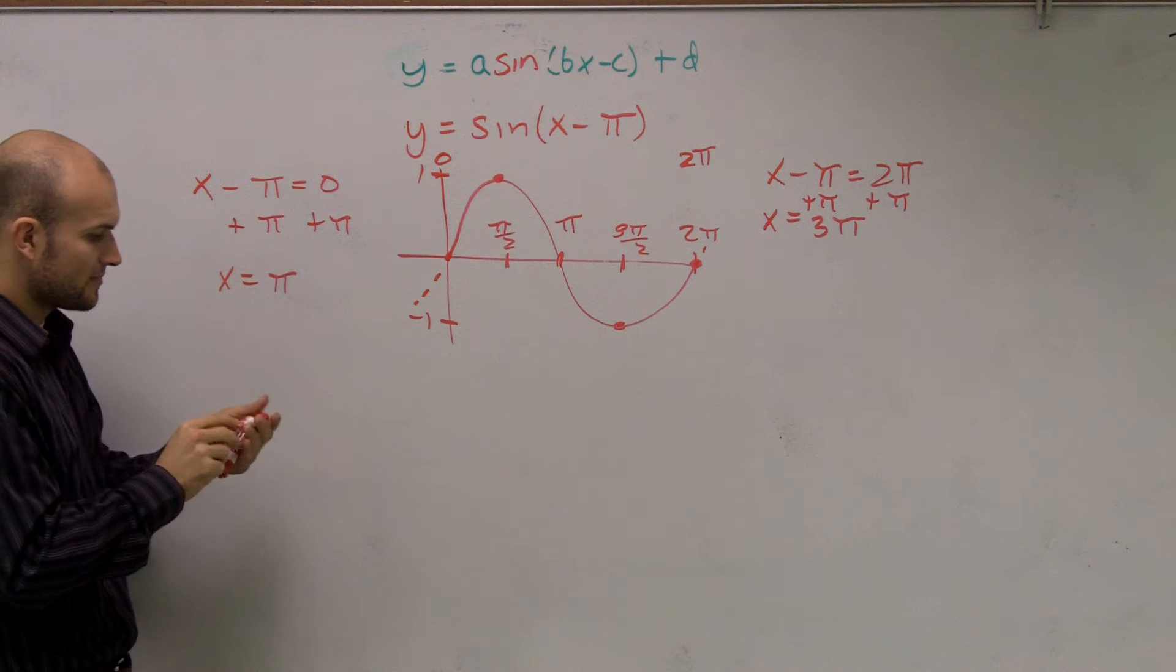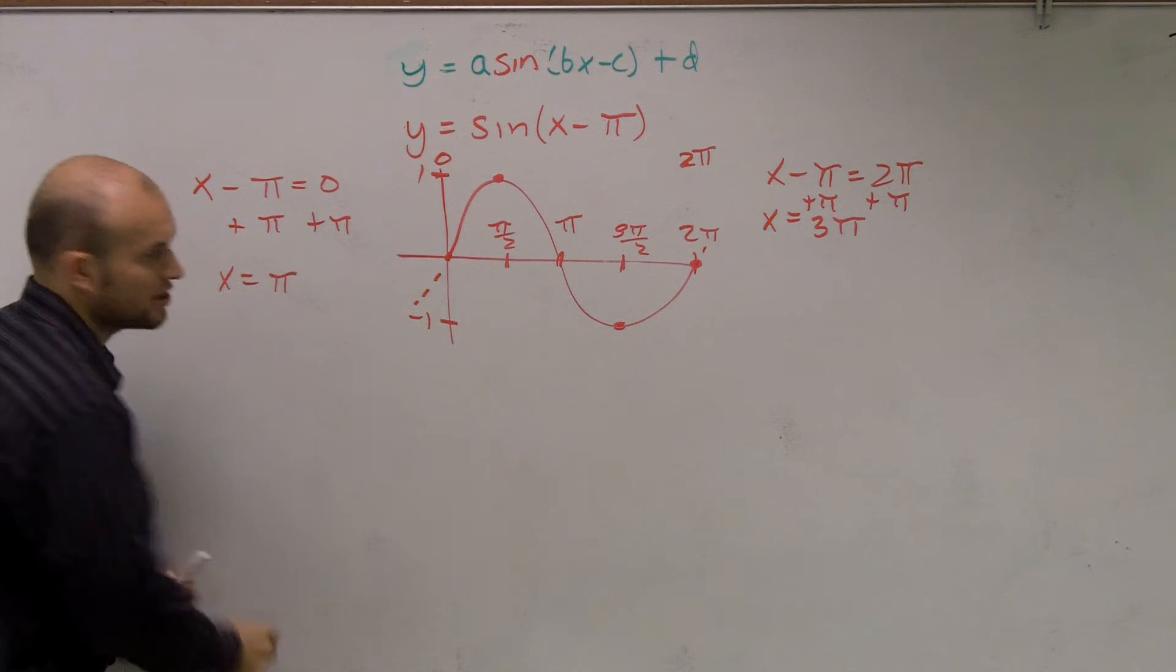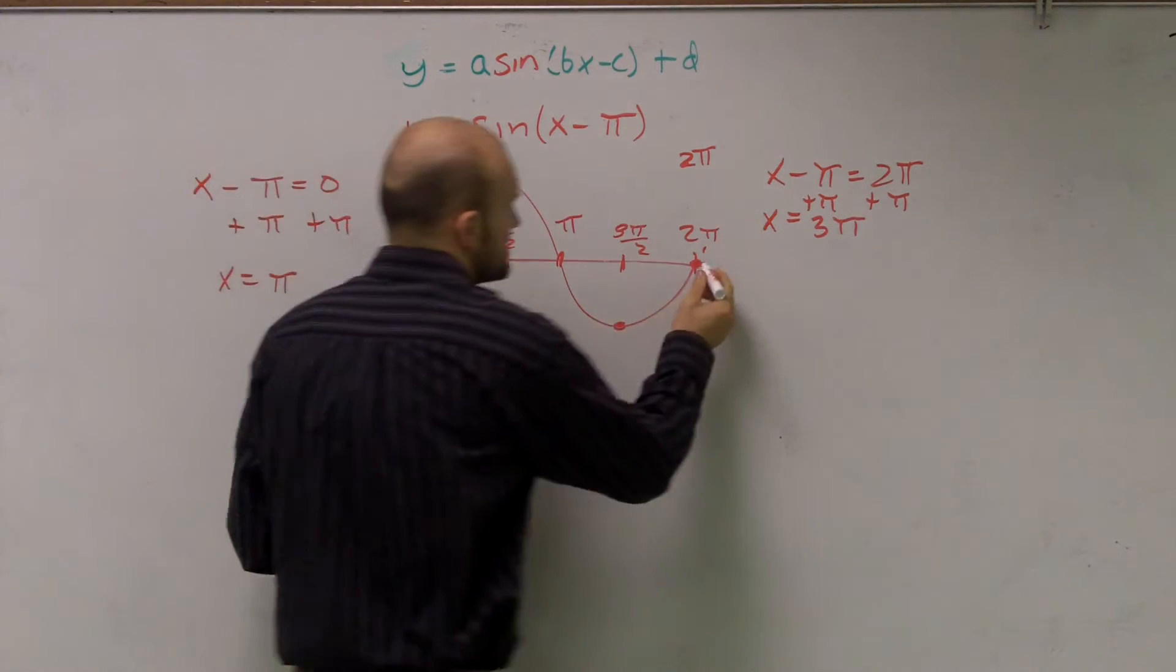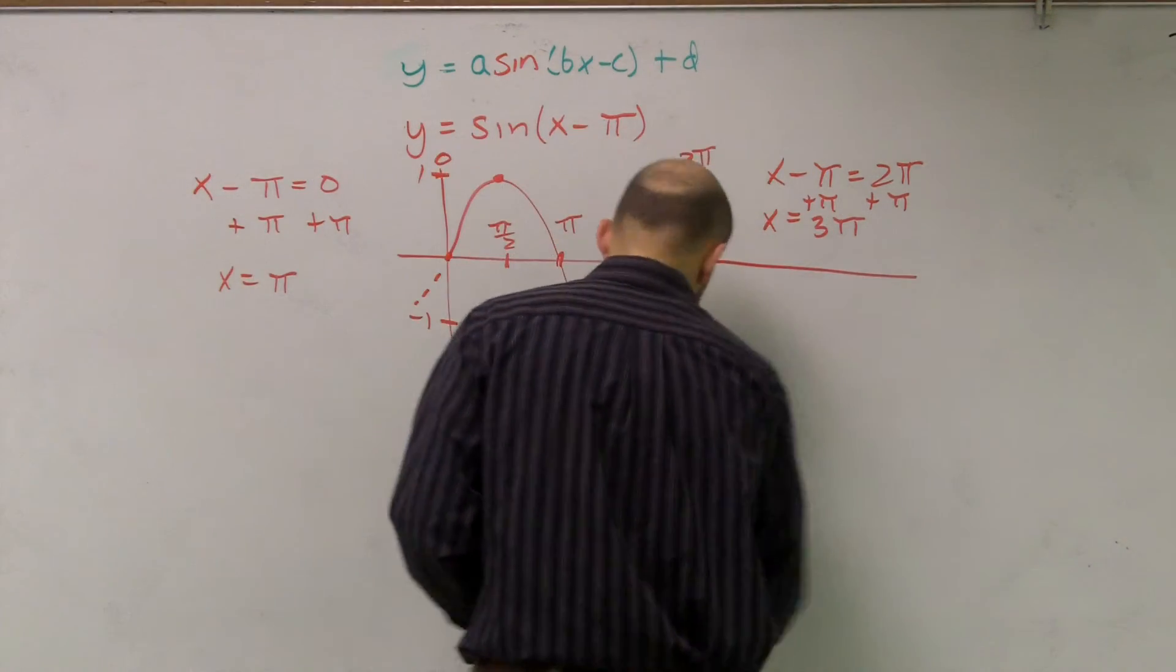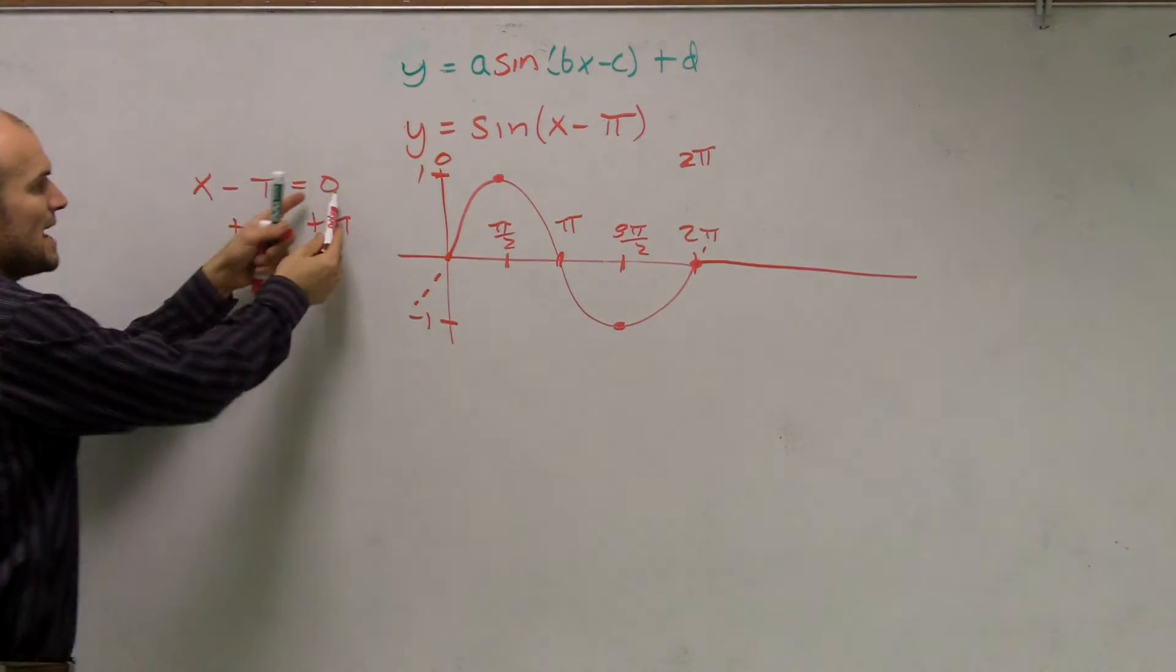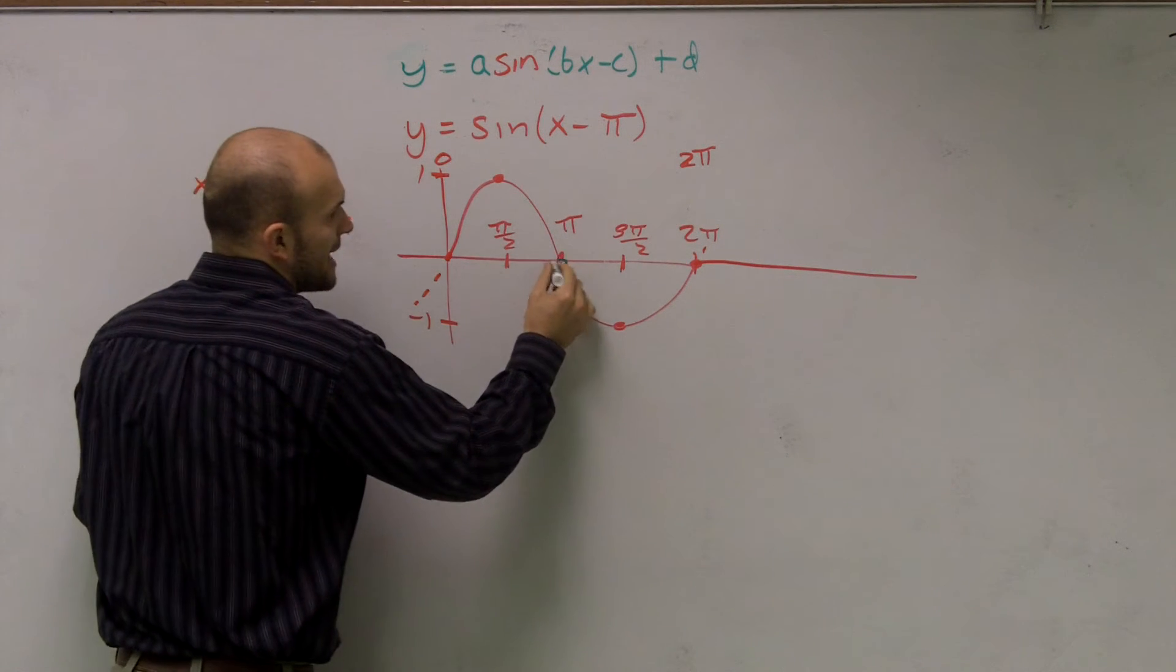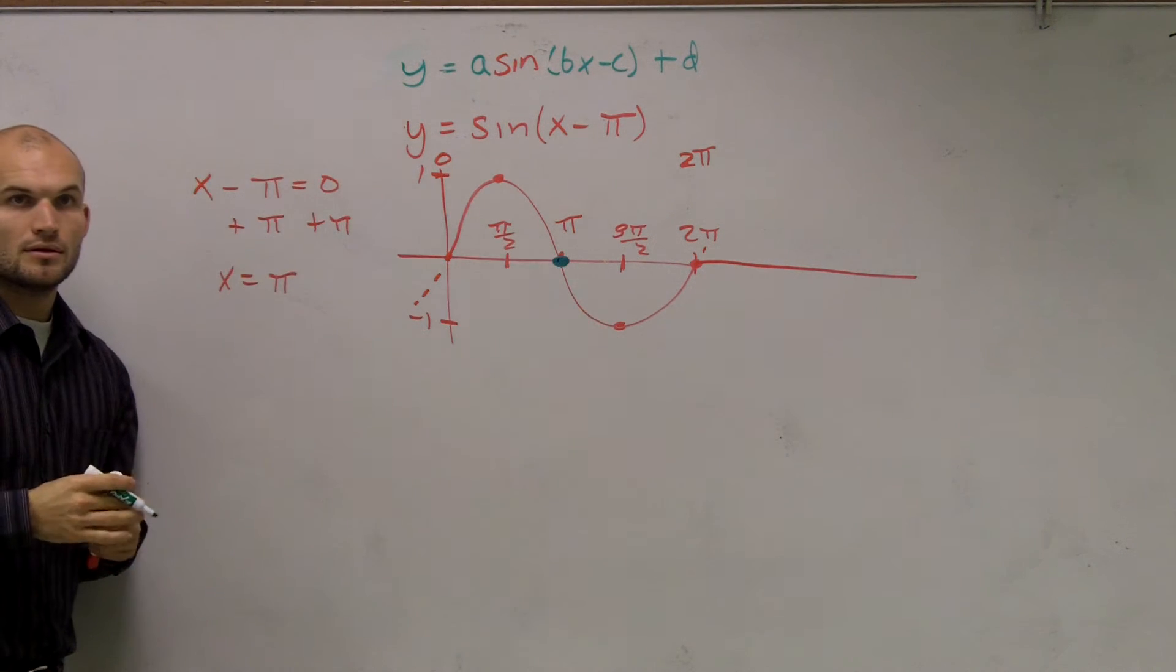So now, rather than my graph starting at 0, it's going to start at π. So I'll use a different color, and I probably need to expand this graph. So then, what it's saying is, instead of my end point being at 0, I want my end point now to be at π. Okay?